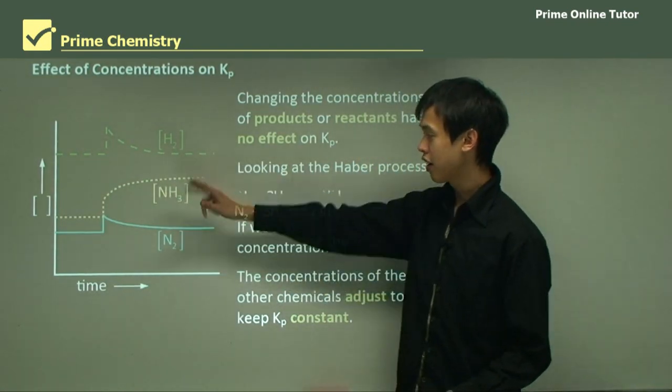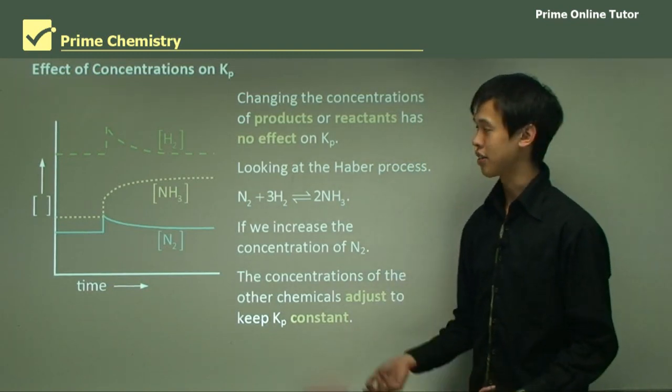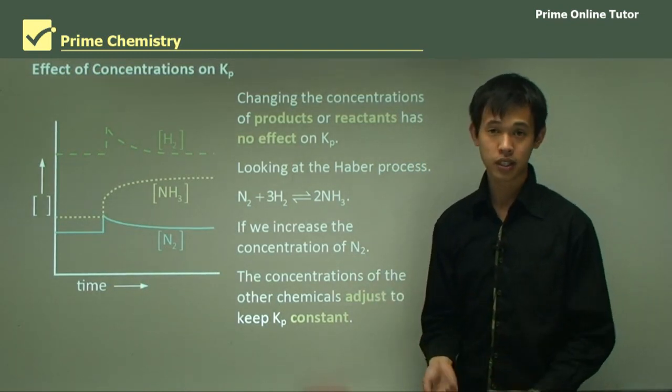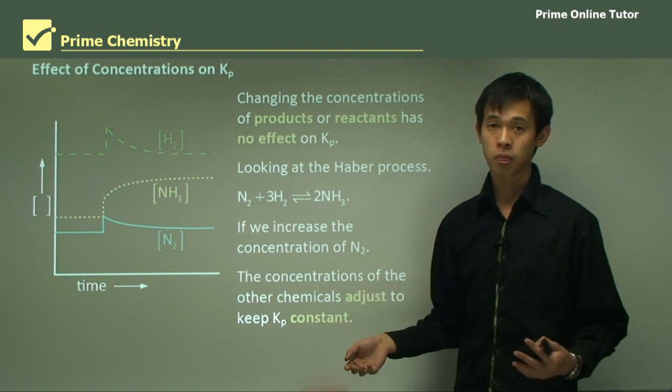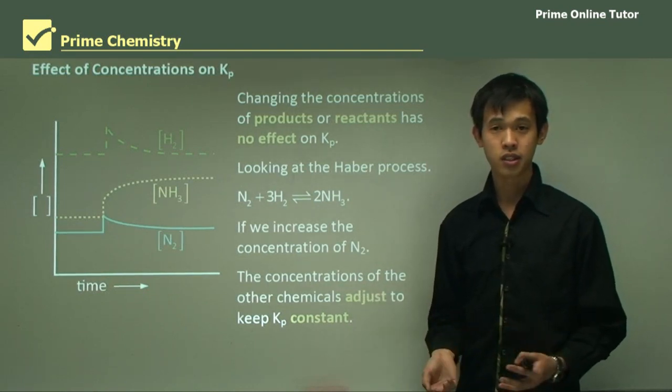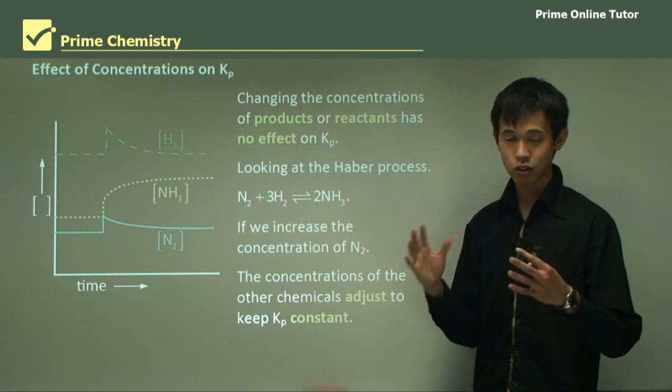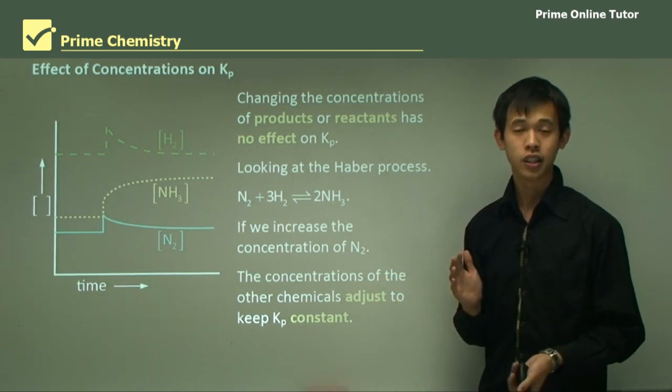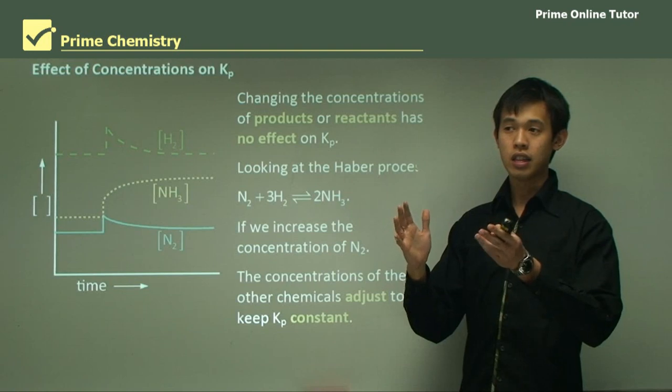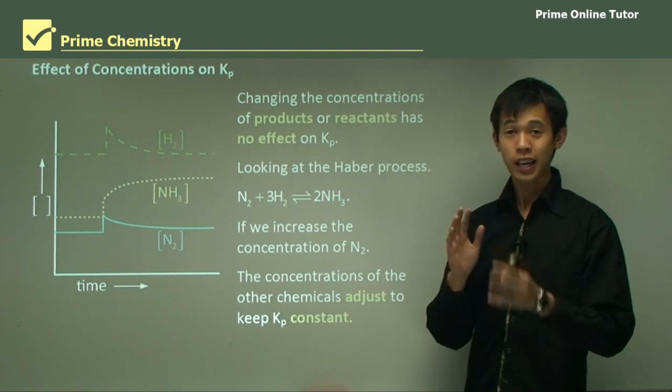Now, that shifting of concentrations essentially just is done simply to keep Kp at the same number. That's why it's called the equilibrium constant, because as you sort of distort the equilibrium with pressure and concentration, the equilibrium will always try to keep that number the same.